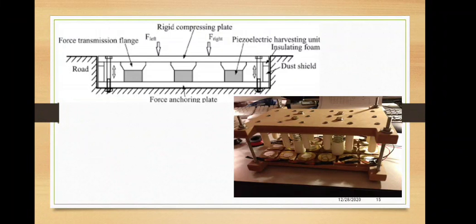In the top figure, you can see a cross-section of a piezoelectric generator. Two forces, F-left and F-right, act on it — essentially the front and rear wheels of a four-wheeled vehicle — which compress a rigid compressing plate. This in turn provides electricity to a piezoelectric harvesting unit anchored by a force-anchoring plate. Force transmission flanges help transmit the compressive load to the piezoelectric harvesting unit, which includes piezoelectric crystals that generate electricity when compressed.